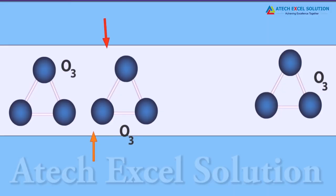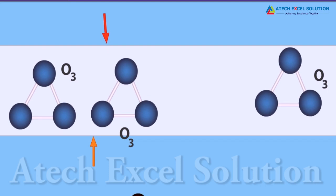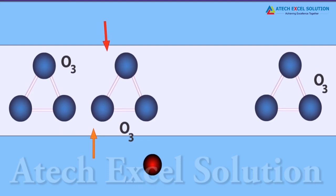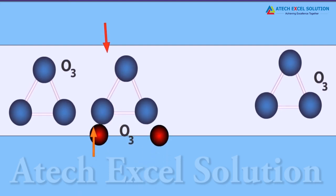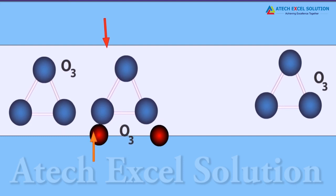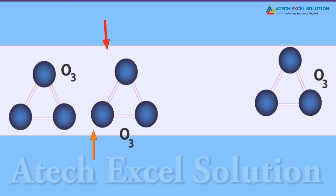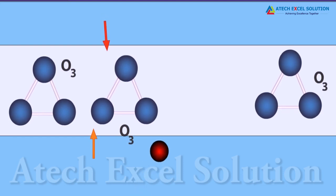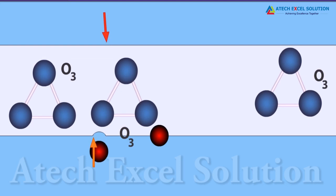Let me show you the difference between the ozone and the normal oxygen we breathe. Our normal oxygen is made up of two oxygen molecules, while the ozone is made up of three oxygen molecules. This ozone is very poisonous and cannot be used for normal breathing, but when it forms the ozone layer it protects us.